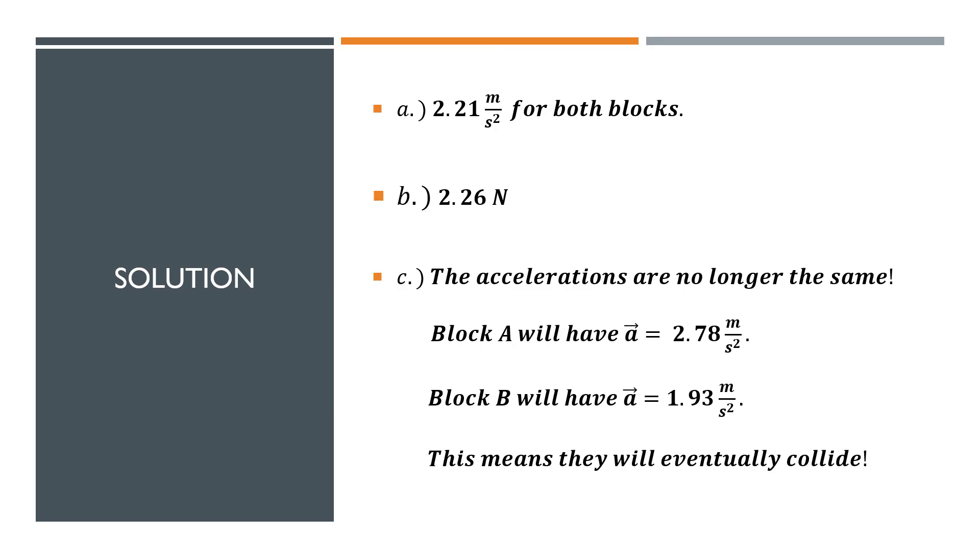Finally, in part C, the new configuration of the blocks, along with their different coefficients of kinetic friction, meant that the string was no longer taut. It's slack now. And this means that the blocks had new individual accelerations. For block A, it's this larger one, 2.78 meters per second squared. And for block B, it's the smaller one, 1.93 meters per second squared. And with this, we came to the reasonable conclusion that they are going to eventually collide if they have enough ramp to do so. And so that is it for this problem.